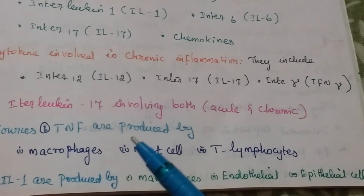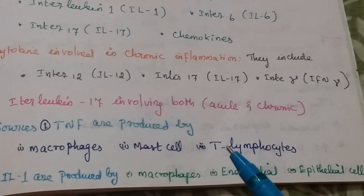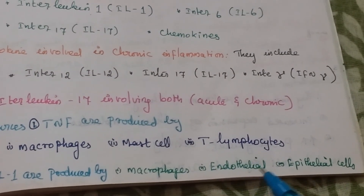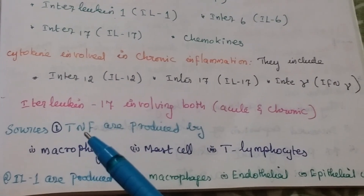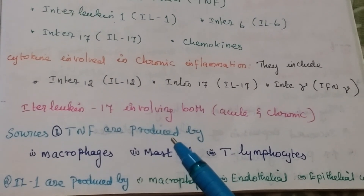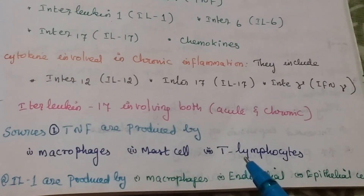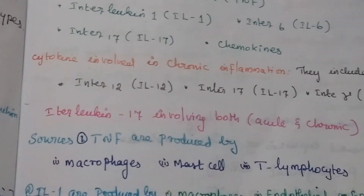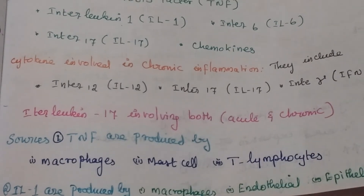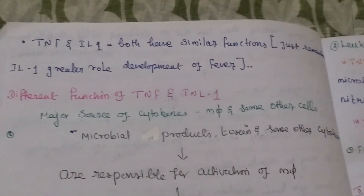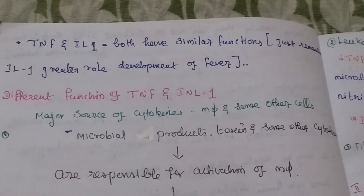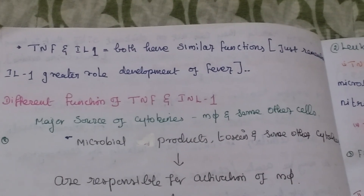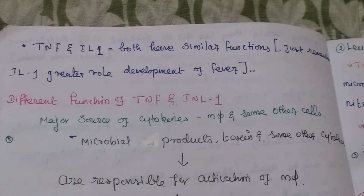Regarding sources: tumor necrosis factor is produced by macrophages, mast cells, and T-lymphocytes. Interleukin-1 is produced by macrophages, endothelial cells, and epithelial cells. Both tumor necrosis factor and interleukin-1 share similar functions, but interleukin-1 has a greater role in the development of fever. In the next video, we will see the different functions of tumor necrosis factor and interleukin-1.